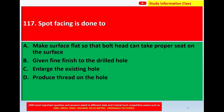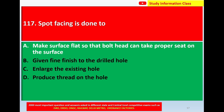For question number 116, the correct answer is Option C, feed. Question number 117: spot facing is done to — Option A: make the surface flat so that the bolt can take a proper seat on the surface; Option B: give a fine finish to the drill hole; Option C: enlarge the existing hole; Option D: produce thread on the hole.